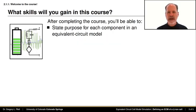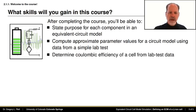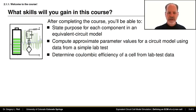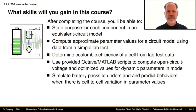After completing the course, you will have gained several valuable skills. You will be able to state the purpose for each component in an equivalent circuit battery cell model. You will be able to compute approximate parameter values for the unknown constants in an equivalent circuit model using data collected from simple laboratory tests on a physical cell. You will also be able to compute more exact estimates of Coulombic efficiency and total capacity of the cell from lab test data. You will be able to use the provided computer programs to compute open circuit voltage and optimized values for all cell model parameter values, and then use this model to simulate battery cells and battery packs in operation.